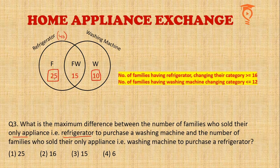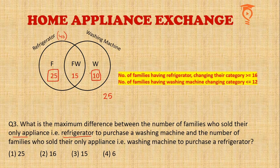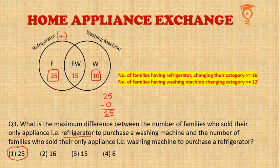The difference is maximum when one value is maximum and the other is minimum. We want to maximize the F-only category changers — what if all 25 people shift from refrigerator-only to washing-machine-only? That is possible. For the washing machine category, the number changing must be less than 12 — and even 0 is possible. So the maximum difference is 25 minus 0, which equals 25. We were told washing machine changers must be less than 12, but there was no minimum criteria stated, so we take that number as 0. That is how we get the maximization of 25.